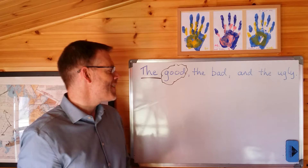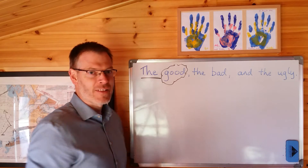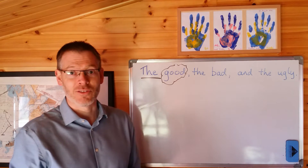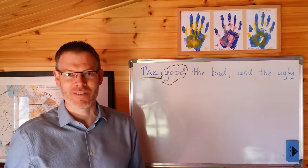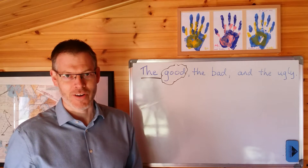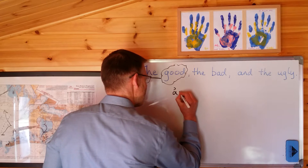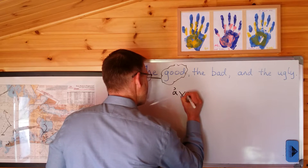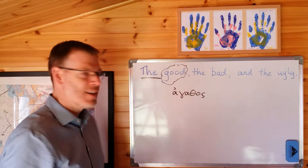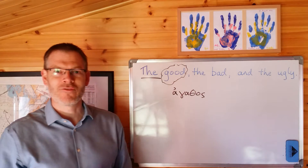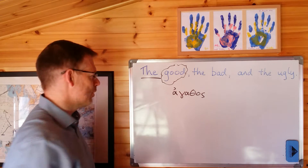We've turned an adjective into a noun by the simple addition of the definite article: 'the good.' Very straightforward. Now, exactly the same thing happens in Greek. Let me show you. Let's get an adjective like agathos, which of course means 'good.' How would we write the phrase meaning 'the good' in the sense of 'the good things' or 'the good people'?